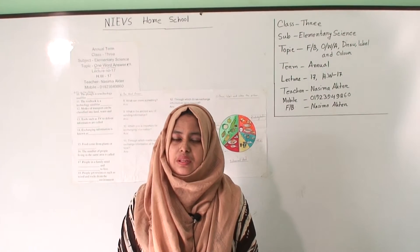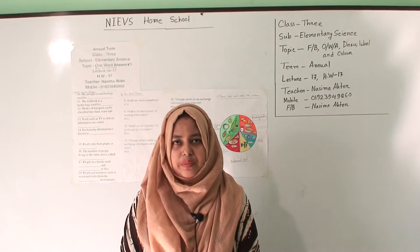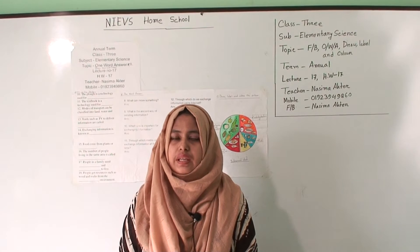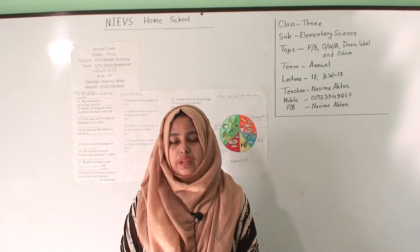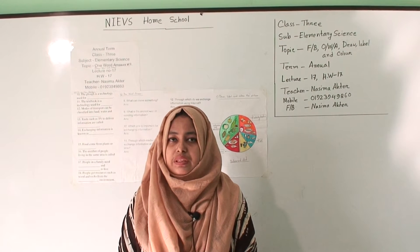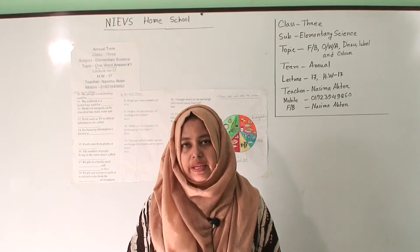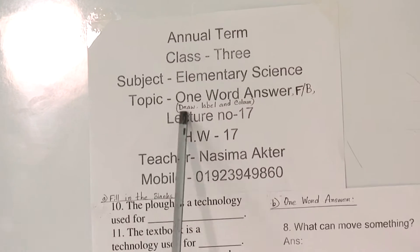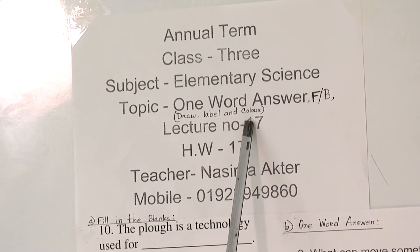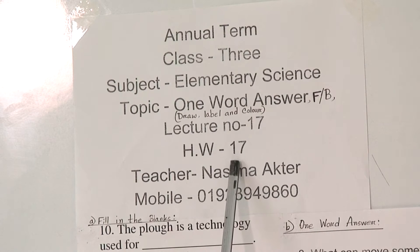Assalamu alaikum, dear students. Welcome to NIEVS Home School. I'm Nasrima Akhtar, assistant teacher of science at National Ideal English Version School. Today I am going to take an elementary science class for Class 3 students. Our today's topic is fill in the blanks, one word answer, and draw, label and color. This is lecture number 17 and the SW number will be 17.